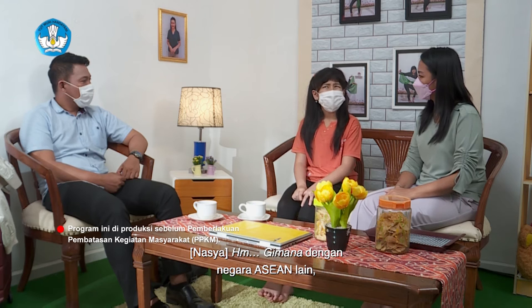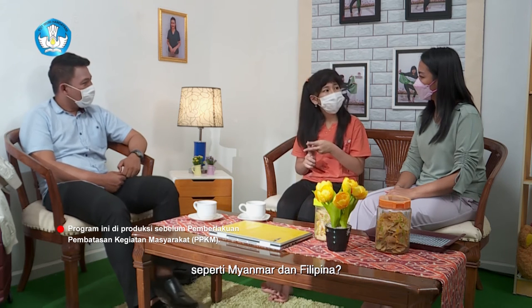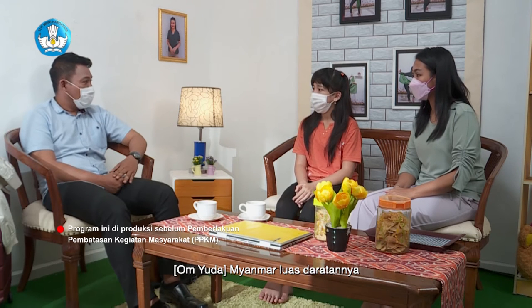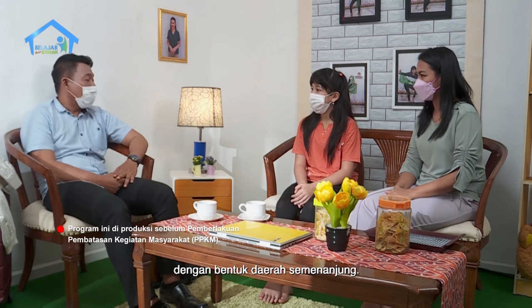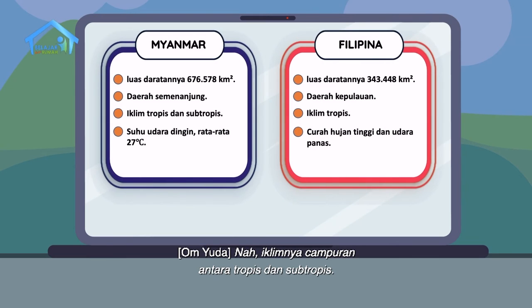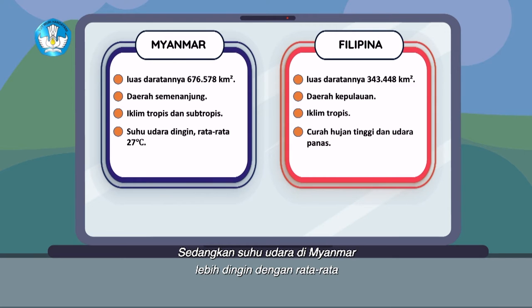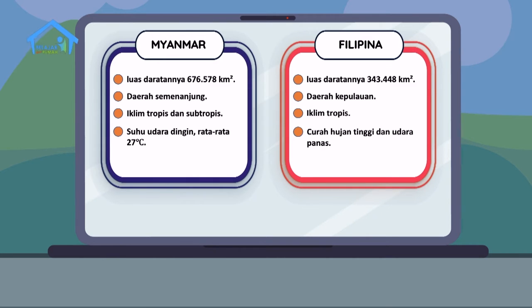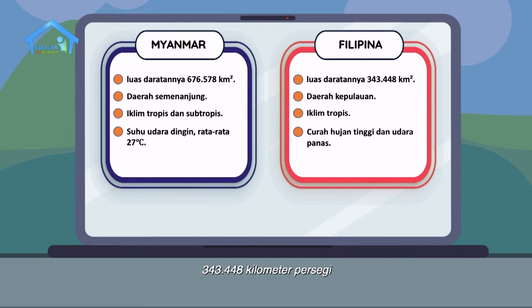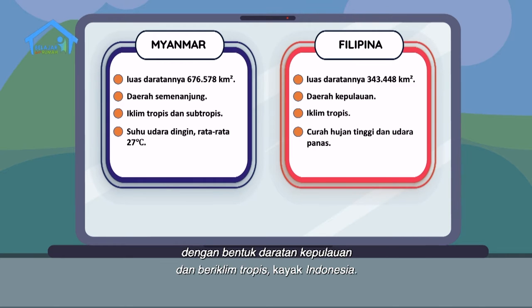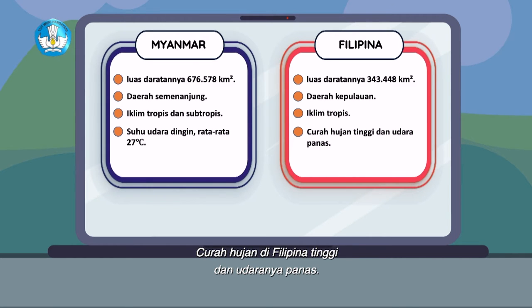Gimana dengan negara ASEAN lain seperti Myanmar dan Filipina? Myanmar luas daratannya 676.578 km persegi dengan bentuk daerah semenanjung, iklimnya campuran antara tropis dan subtropis, dan suhu udara di Myanmar lebih dingin dengan rata-rata 27 derajat Celcius. Sedangkan Filipina, luas daratannya 343.448 km persegi dengan bentuk daratan kepulauan dan beriklim tropis seperti Indonesia, curah hujan tinggi dan udaranya panas.